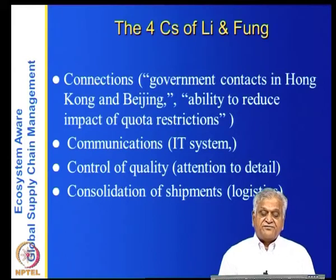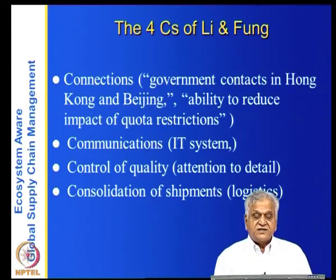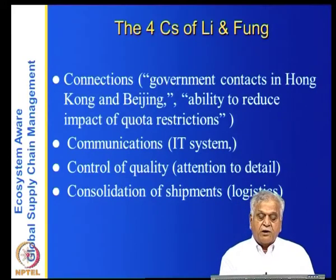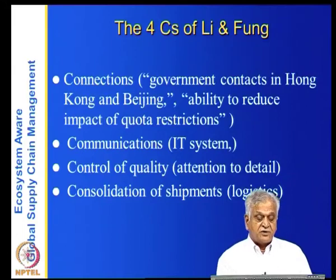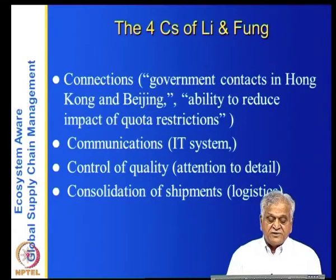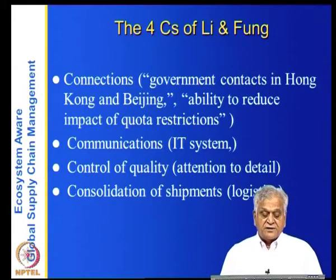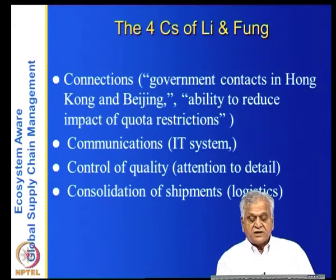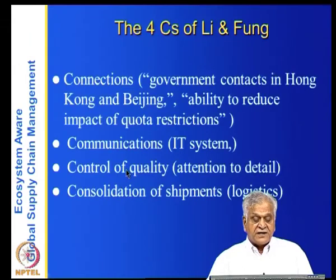All four C's contribute to service delivery. Connections help with customs clearances and save time and safety inventory. Communications keep everyone in touch, and information can replace inventory to reduce costs. Quality can be checked via video conferencing and other means. Consolidation of shipments provides a cost advantage. These four service delivery mechanisms — along with IT logistics — are core strengths, with sophisticated IT and centralized back office systems.